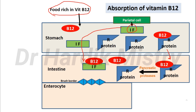Intrinsic factor is synthesized from the parietal cells of the stomach — please remember that. Once the vitamin B12 and intrinsic factor complex is formed, it travels from the duodenum through the jejunum to the terminal ileum, where it comes in contact with the brush border of the enterocyte. Enterocytes are the cells of the intestinal mucosa, and on the luminal surface they have a brush border.